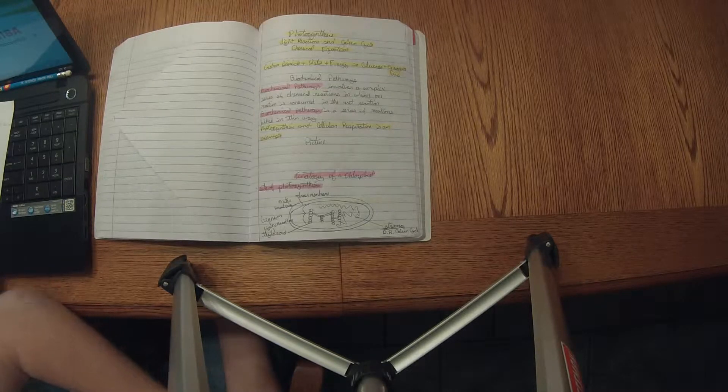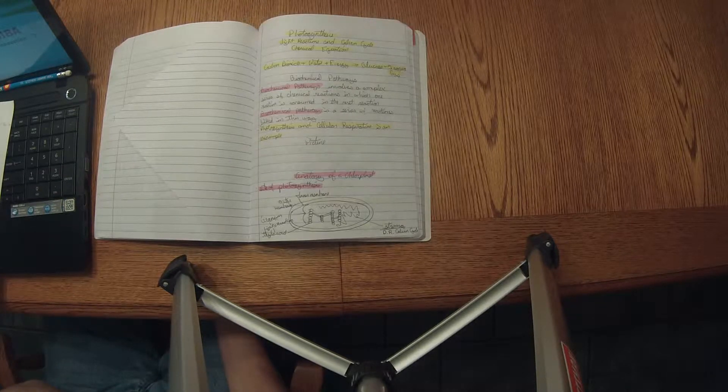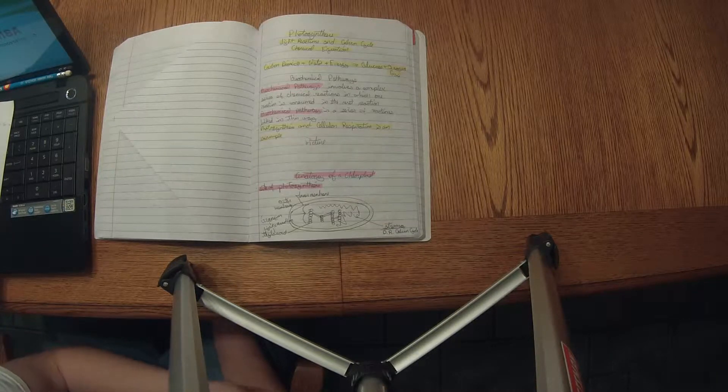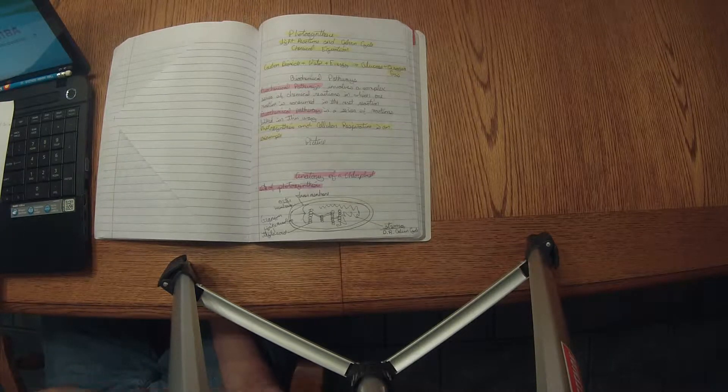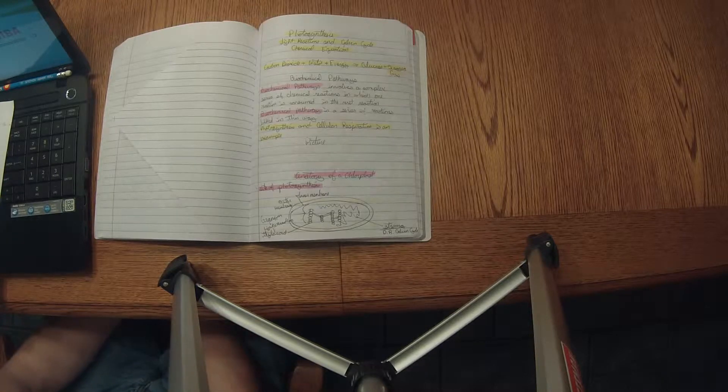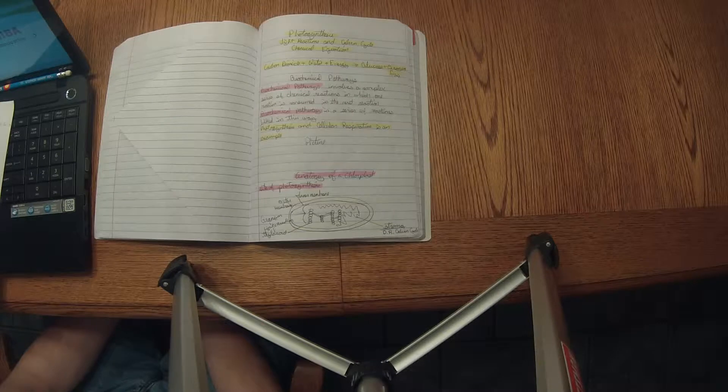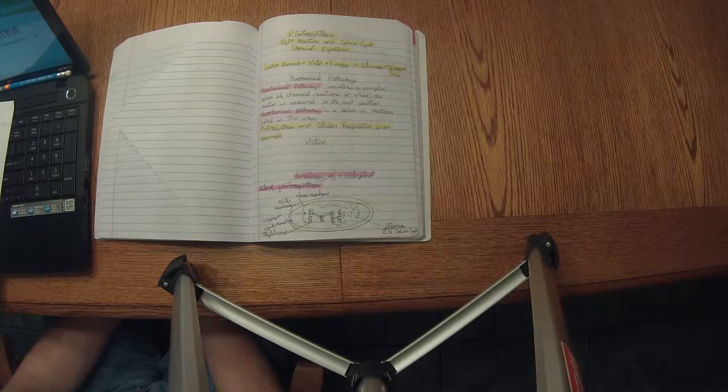The requirements are water from the xylem, carbon dioxide from the stomata, sunlight from the pigments chlorophyll A, B, and carotenoids, NADPH, ATP, and chlorophyll which would be A, B, and C again.